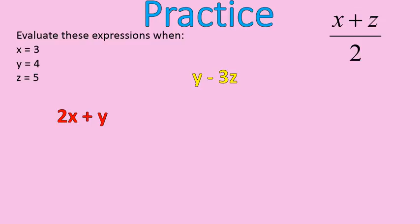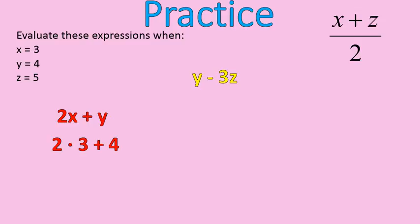We're back. 2x plus y — let's start with the red expression. I'm going to substitute x equals 3 and y equals 4. Notice that 2x means 2 times my value of x, which is 3, and y equals 4. We do multiplying before addition, so 2 times 3 is 6, and 6 plus 4 equals 10.